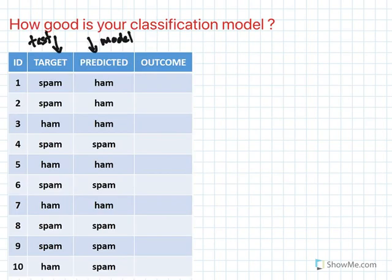We go back to our table and try to label each entry. For the first one, when your original data is spam and your model predicted it as ham — this is actually false. Is it false negative or false positive? This is going to be false negative.